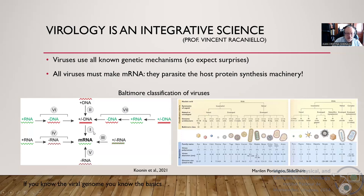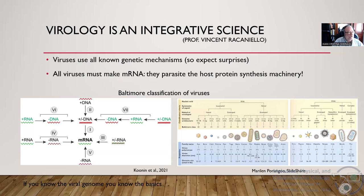When you need to multiply, at the end you will have to synthesize mRNA — that is the key. If you study any kind of virus with this classification, you have a scheme and know what can happen. One thing is the genetic material in the capsid; another thing is how the virus gets a strategy to infect cells, multiply, and generate new particles. If you know the viral genome you know the basics.